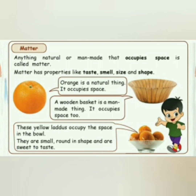See the wooden basket in the picture. A wooden basket is made up of wood — wood is a natural thing we get from trees, but it becomes a man-made basket after it is shaped into different sizes, and it also occupies some space. The last example is yellow ladoo — they are very tasty, round in shape, smaller in size, and have a sweet taste. They also occupy space in a bowl. So matter is something which occupies space — it can be either natural or man-made.